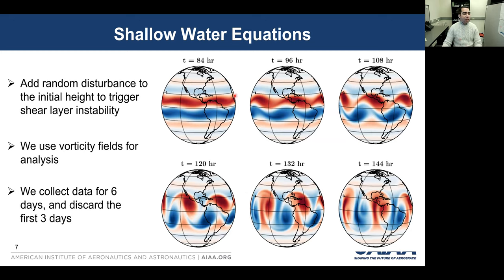To start the simulation we add some random disturbance to the equilibrium conditions. For our analysis we consider the vorticity field. We collect data for six days and exclude the first three days from our data sets because they are just spin up time.